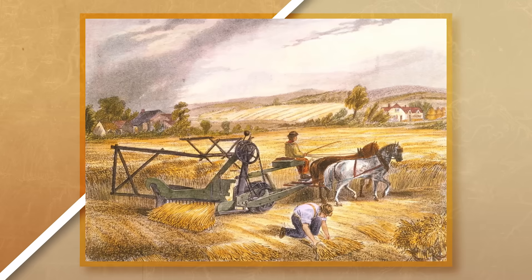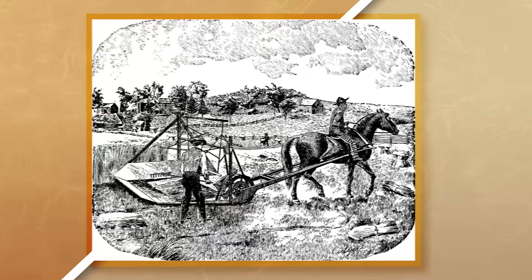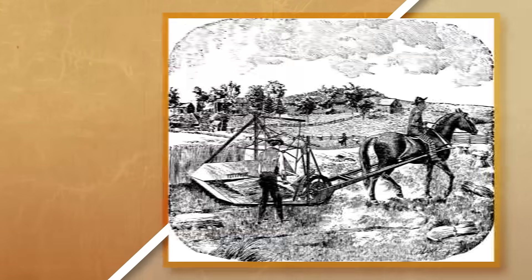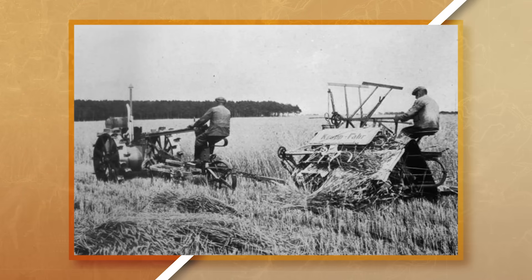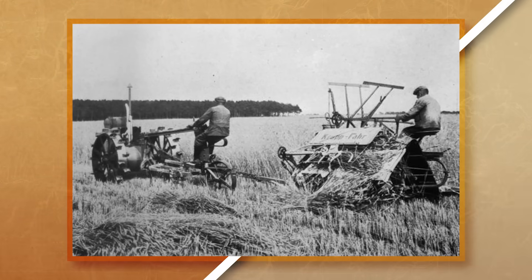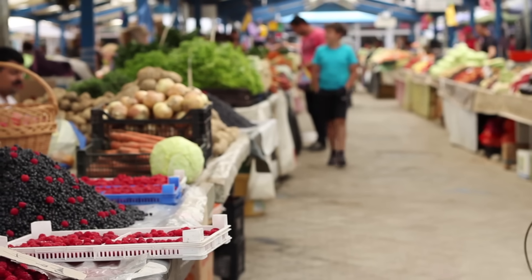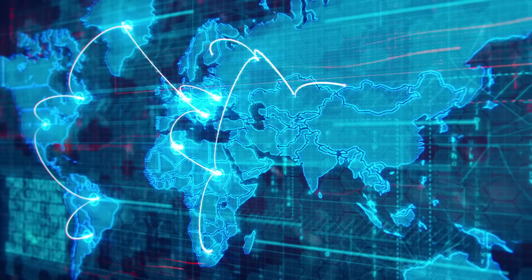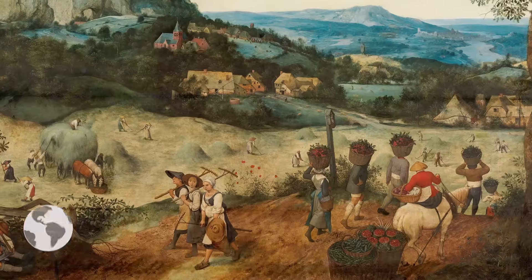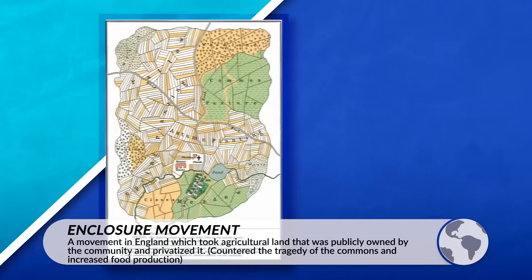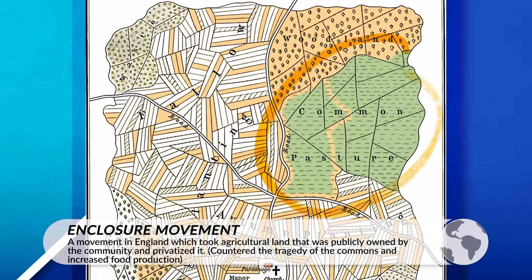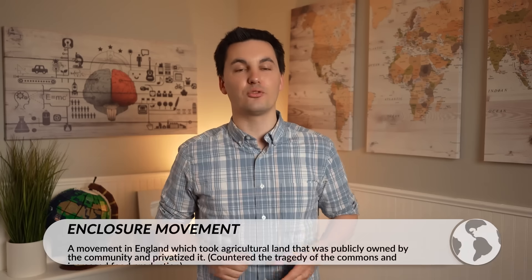We can see the impact of new agricultural technologies, which allowed for the mechanization of farming to occur, all of which decreased the reliance on human labor and increased the output of each farm. Thanks to advancements in transportation, farmers could now ship their crops farther and faster, which allowed them to participate not only in their local market, but markets around the country and eventually the world. As time went on, we eventually saw the enclosure movement occur, which allowed for farms to become even more efficient, leading to even more output and increased urbanization.